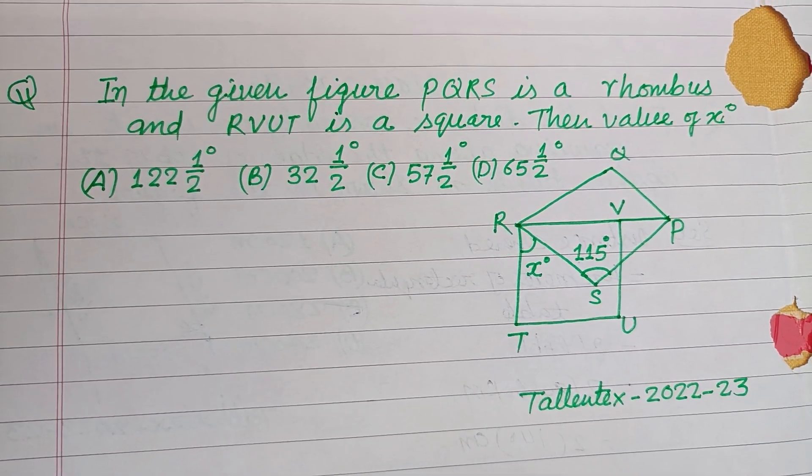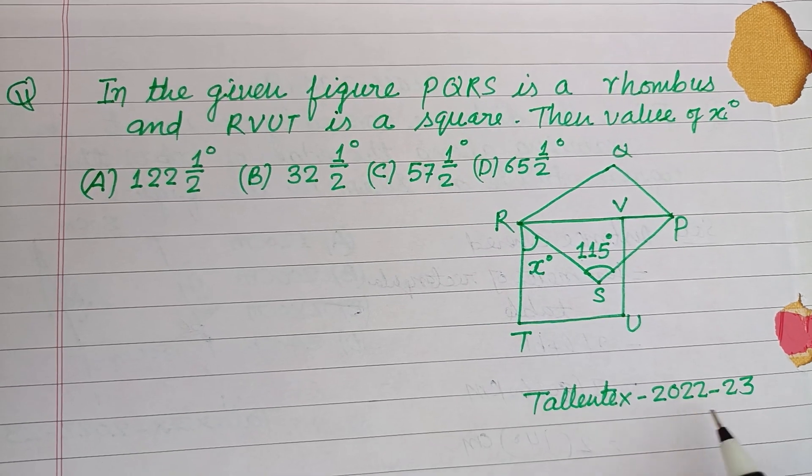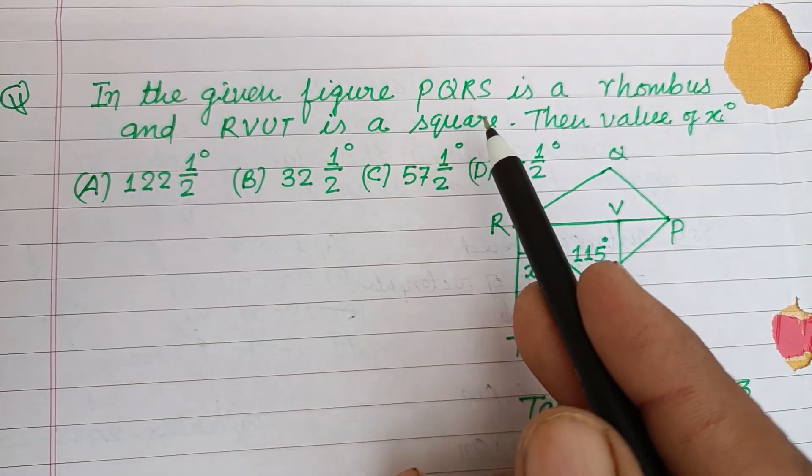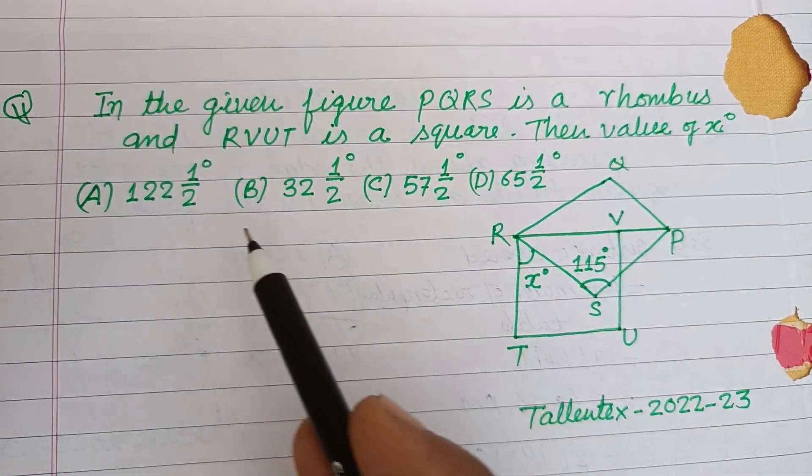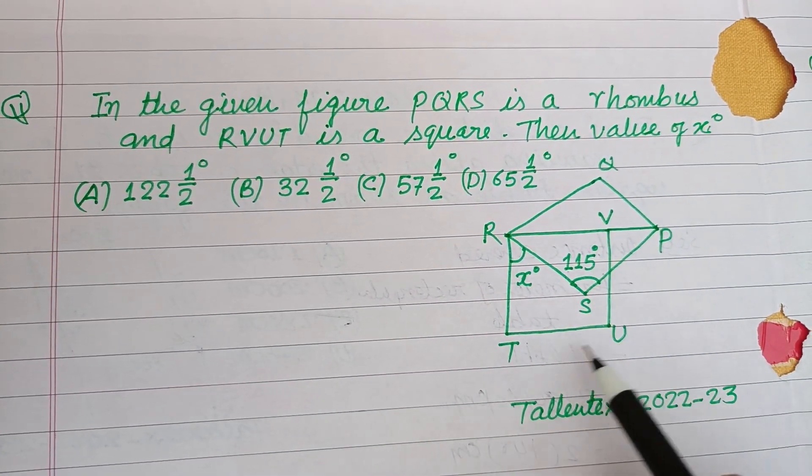Hello viewers, warm welcome to this YouTube channel. This is a question from Talent X 2022-23. In the given figure, PQRS is a rhombus and RVUT is a square. Then the value of x is?